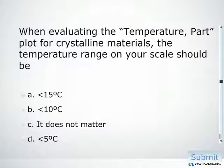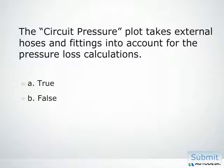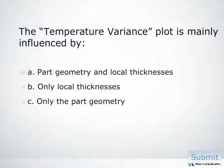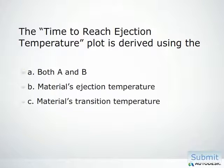When evaluating the temperature part plot for crystalline materials, the temperature range on your scale should be under 5 degrees Celsius. The circuit pressure plot does not take external hoses and fittings into account for pressure loss calculations — that is false. The temperature variance plot is mainly influenced by part geometry and local thicknesses. The time to reach ejection temperature plot is derived using the material's specified ejection temperature measured from the start of the cycle.